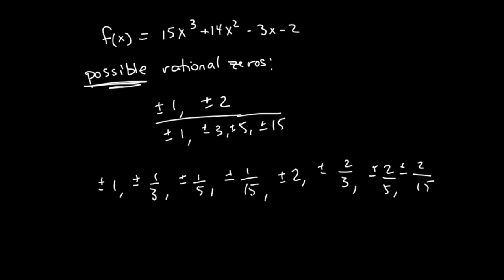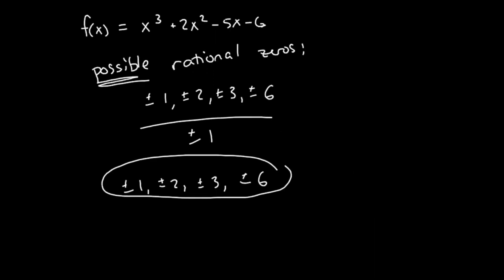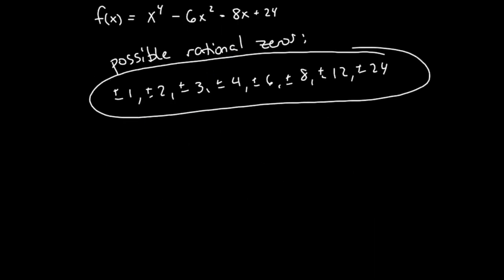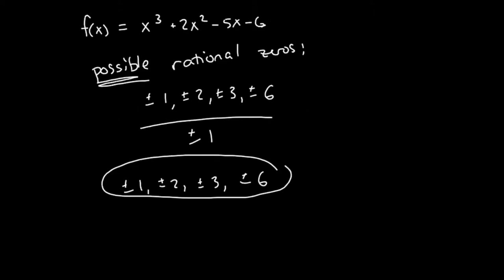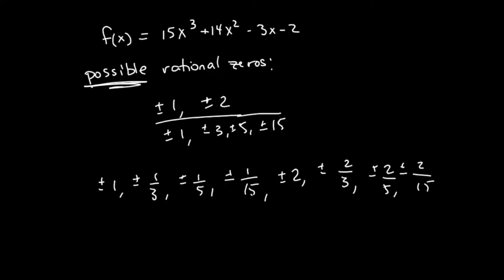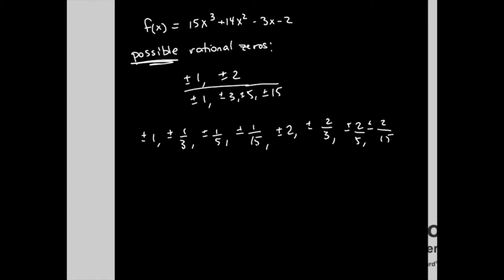In the last video we talked about these three polynomial functions and their possible rational zeros, and we listed them using the rational root theorem. Now I'm actually going to determine if they are zeros, and if they are, let's factor it down and find all the zeros. So we're going to find all the zeros and all the linear factors, using the remainder theorem and the factor theorem.